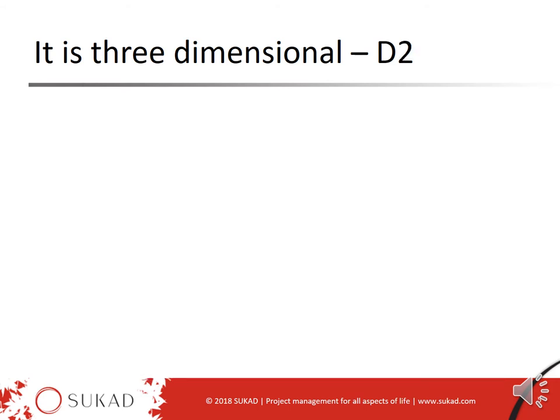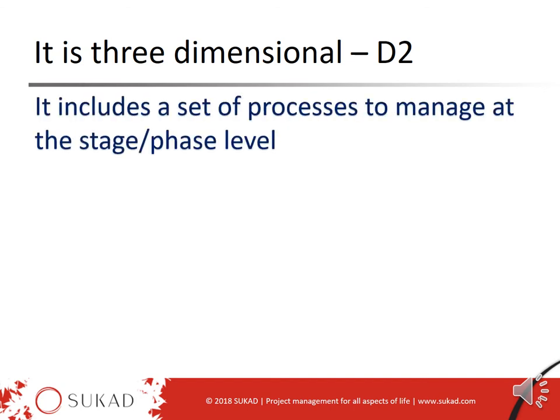For simple projects, maybe the first dimension is good enough. However, as projects get larger — medium to large to mega — going from moderate to high complexity, we need something else. We need to manage at the stage level. The project lifecycle helps us manage from beginning to end, but when we get to larger projects, every stage or phase has to be managed as well. That is where the second dimension comes in, focusing on the processes to help us manage at the stage or phase level.